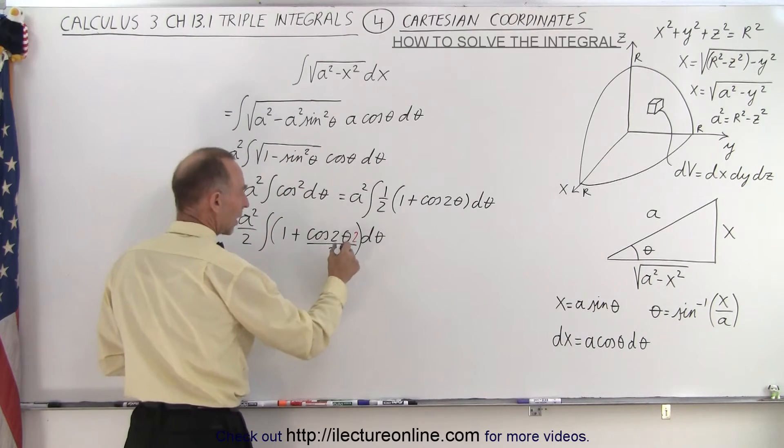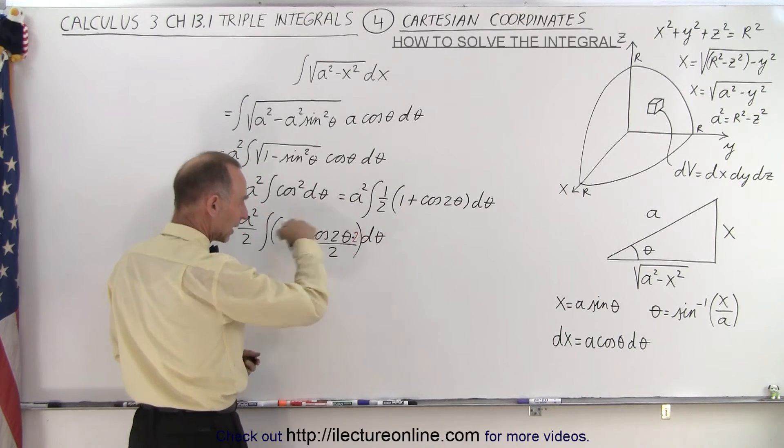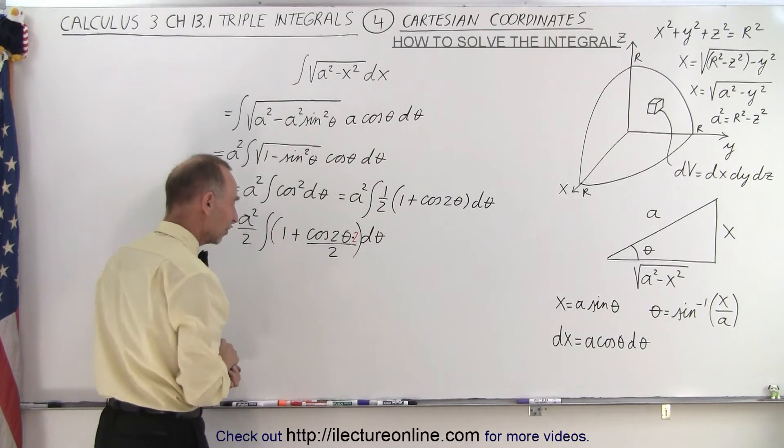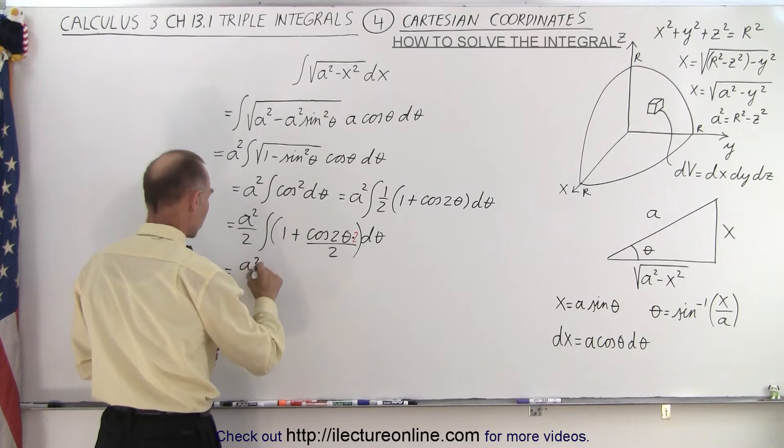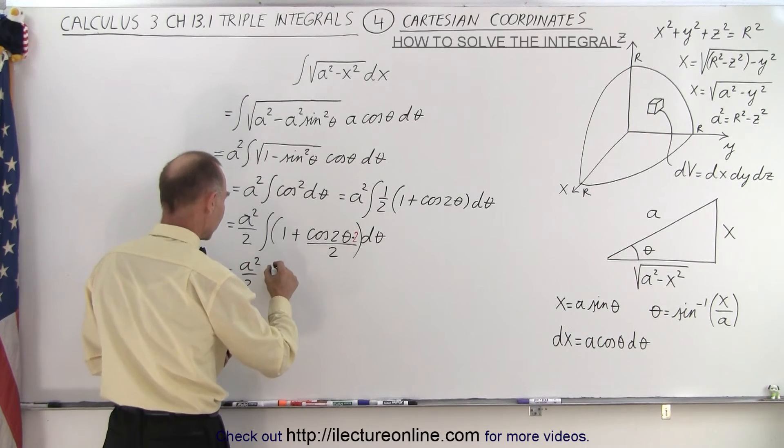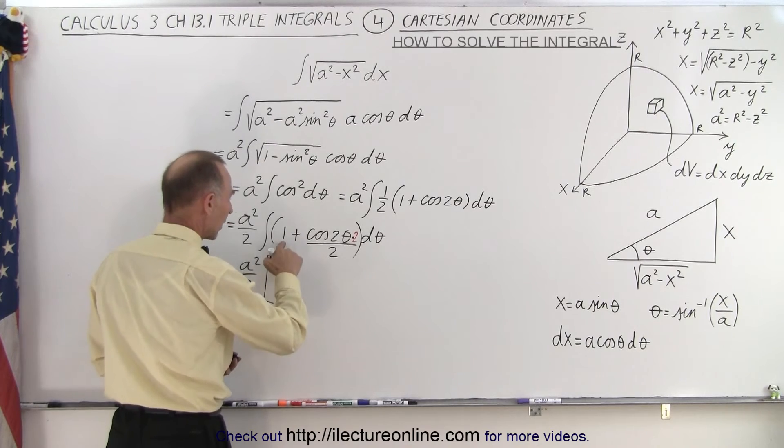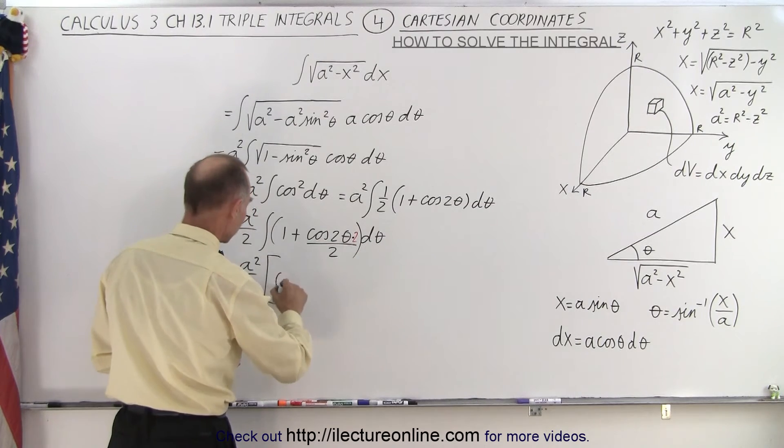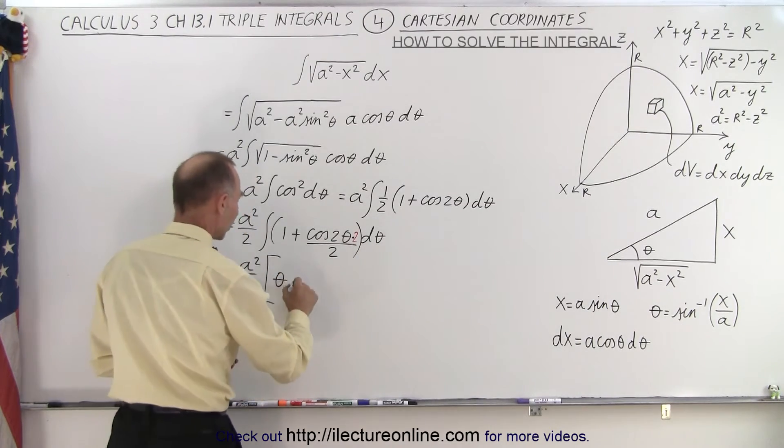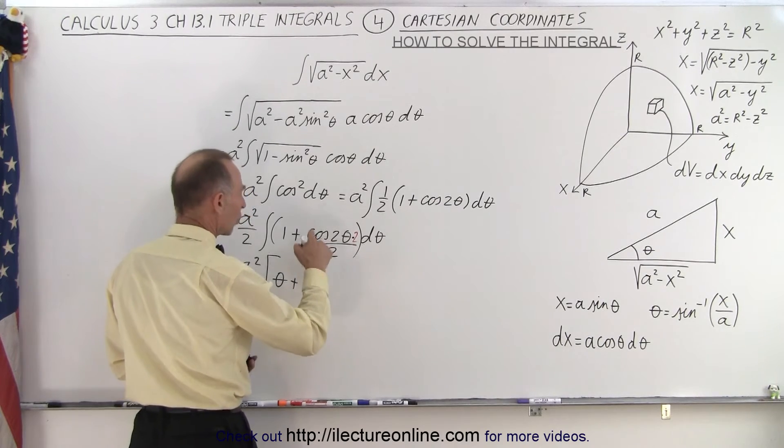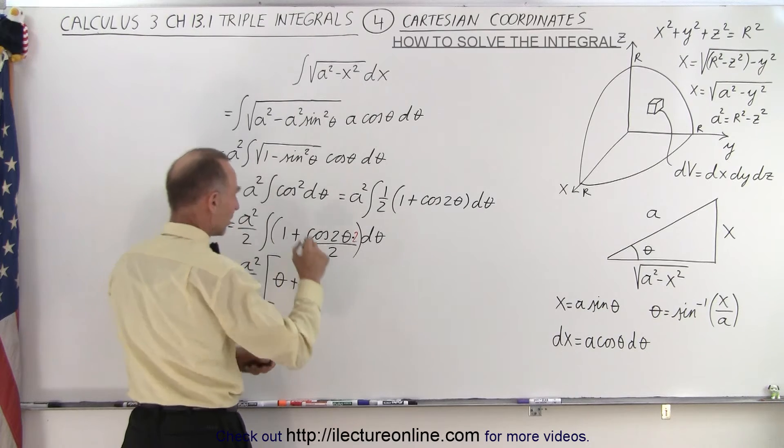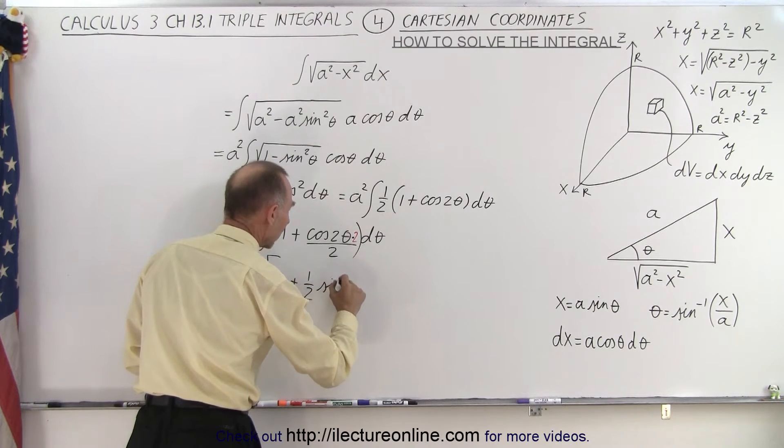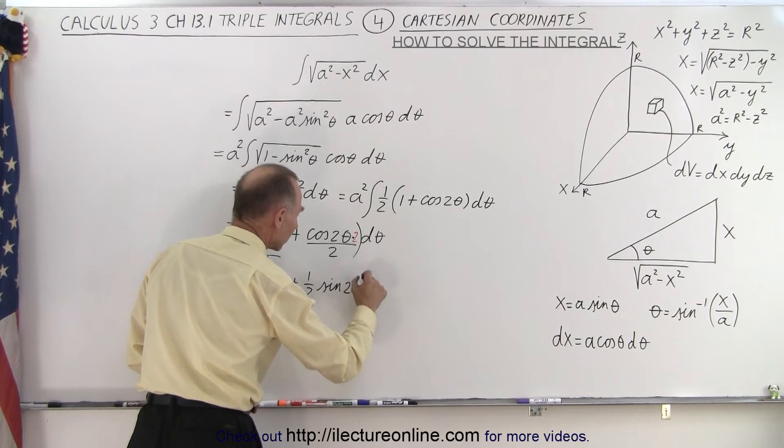So that allows me, this is a multiplication, so that allows me to take that integral. But I have this 1 half left over here. So that gives me equal to a squared over 2 times, well now when we integrate, we have 1 times d theta gives me theta, and then plus 1 half times the cosine of 2 theta, 2 d theta. And that would give me the sine of 2 theta, like this.